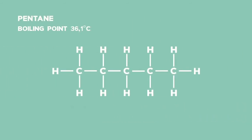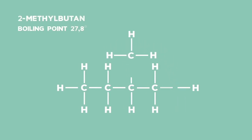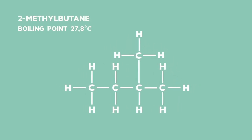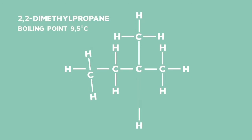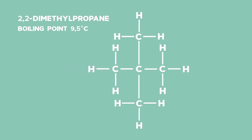Chain isomers can also differ in the strength of their IMF. The more branched carbon chains have less available surface area for bonding sites to occur. Therefore, as the number of branches increases, the energy required to break the IMF decreases, and so does the boiling point.